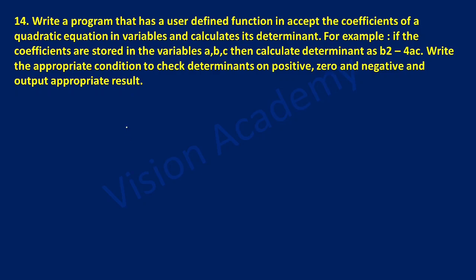Hello and welcome to Vision Academy. In this video we are going to study lab program 14: write a program that has a user defined function that accepts the coefficients of a quadratic equation and calculates its determinant. If the coefficients are stored in variables a, b, c, then calculate the determinant as b squared minus 4ac. Write the appropriate condition to check if the determinant is positive, zero, or negative and output the appropriate result.